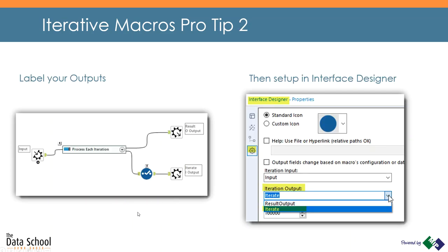Second tip is all about labelling your outputs. When you have a macro output, the tip is to change its label to the word 'result', and if you have another output, change that to be the word 'iterate'. This becomes really important when setting up your macro so that Alteryx knows which one to iterate back around to. In the Interface Designer Properties tab, there's a dropdown that allows you to set your Iteration output — in this case we've selected 'Iterate' rather than 'result'.